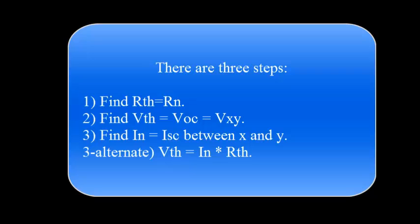There are three steps in this solution. The first step could be to find the Thevenin resistance, which is the same as the Norton resistance. The second step could be to find the Thevenin voltage, which is the same as the open circuit voltage — that is, the voltage between X and Y in the original circuit with nothing connected between X and Y. The third step could be to find the Norton current, which is the short circuit current.